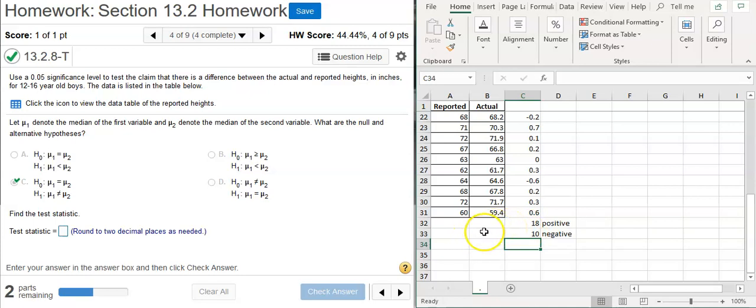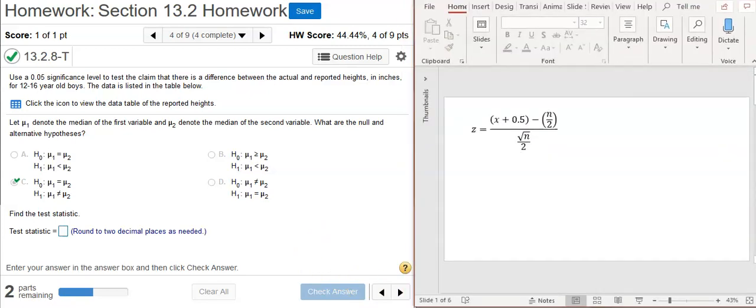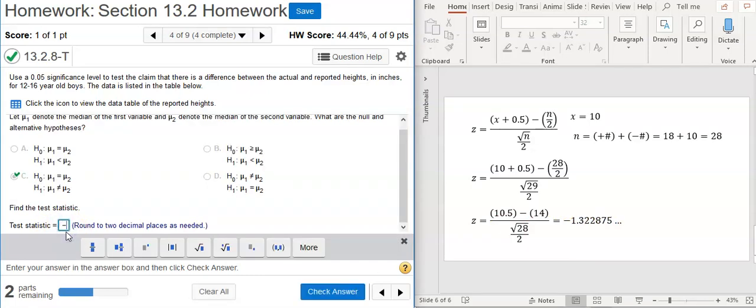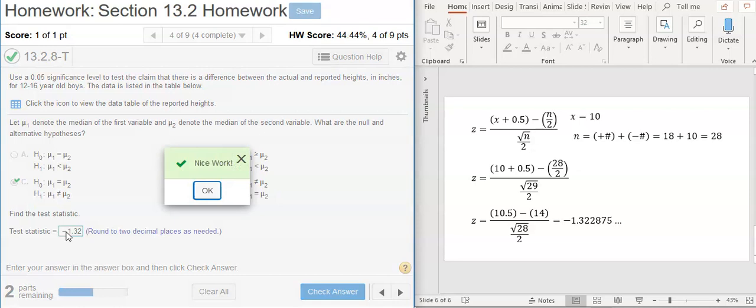And to do that we're going to go back to our handy dandy z-score formula. So here we're going to see that x is the less of those two numbers, so that's going to be 10. And n is going to be the sum of those two numbers which is 28. So now we substitute those into our formula. And well, that should actually be a 28 there. Well, that's a typo. And then yeah, so we got that number fixed right here and then we just simplify that expression, punch it on the calculator, and here comes our test statistic, negative 1.32. Nice work.